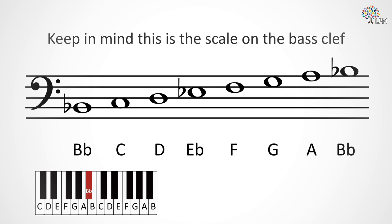You should end up with something like this. Now, how many black keys do we have? You should have just two: Bb, obviously, as well as Eb.